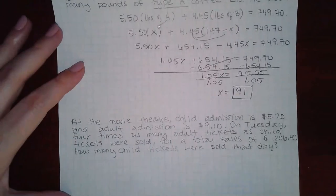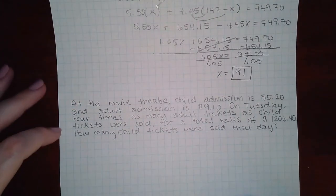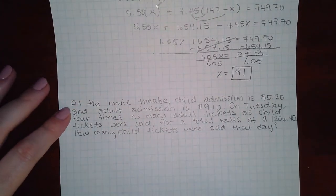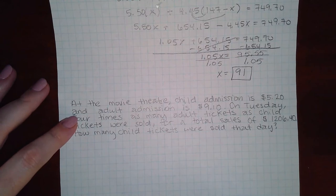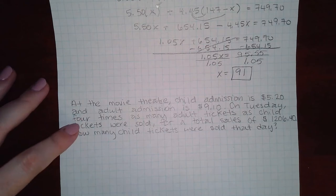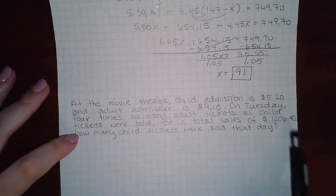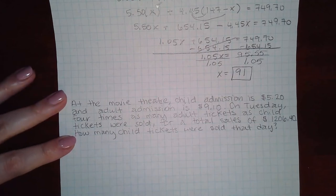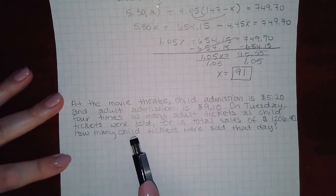Now I have another example. So it says at the movie theater, child admission is $5.20 and adult admission is $9.10. On Tuesday, four times as many adult tickets as child tickets were sold for a total sales of this much. How many child tickets were sold?